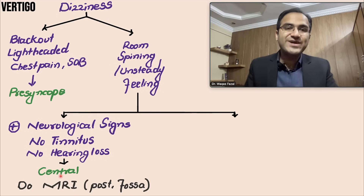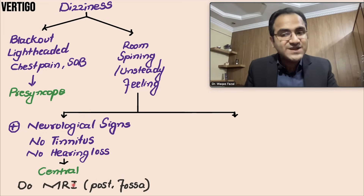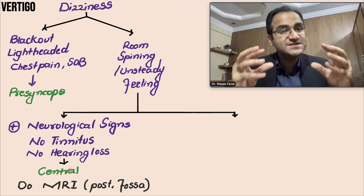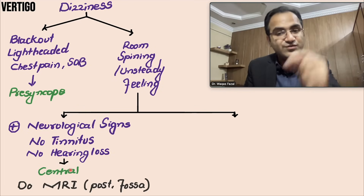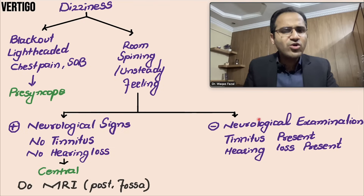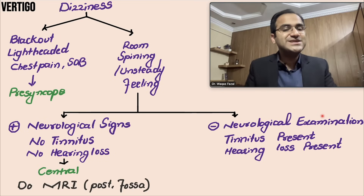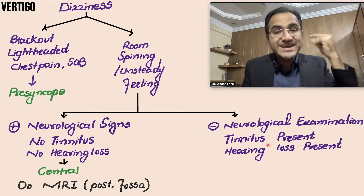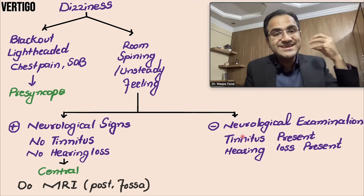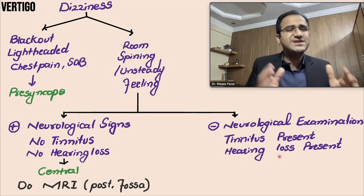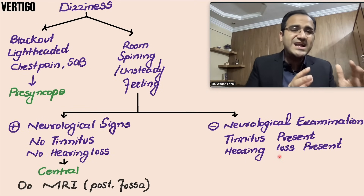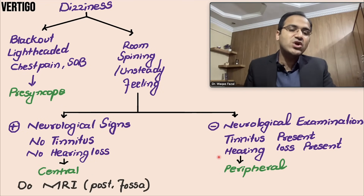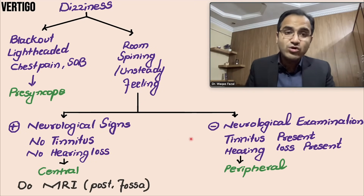If you suspect central vertigo, the next step is to do a posterior fossa MRI to look for lesions such as a cerebellar stroke or tumor. If the neurological exam is normal and the patient has tinnitus or hearing loss, the problem is most likely with the ear — peripheral vertigo. Peripheral causes are milder and can be treated more easily. So in the absence of neurological findings and presence of tinnitus and hearing loss, it is most likely peripheral vertigo.